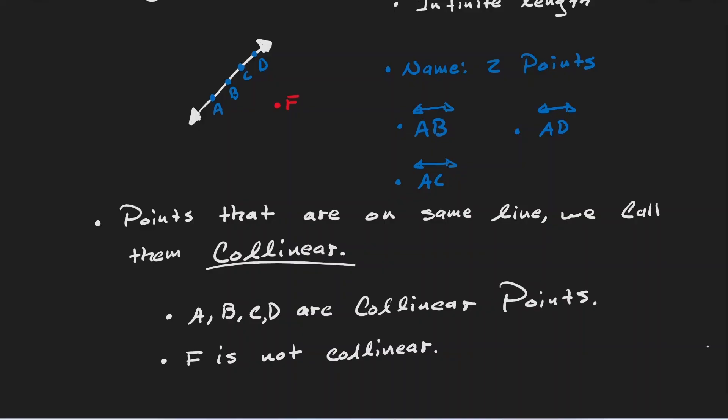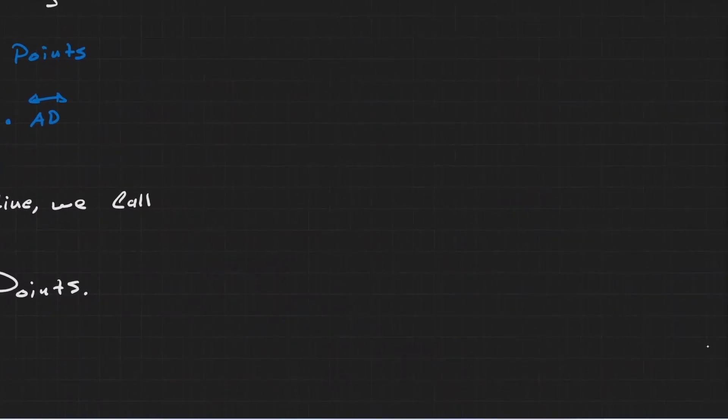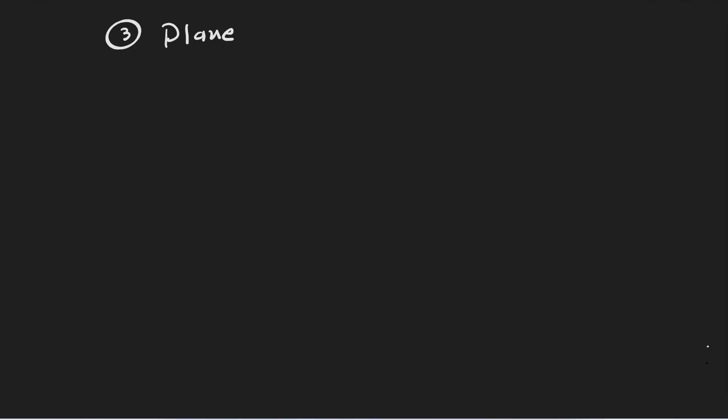Perhaps the last item we need to discuss today is a plane. So what exactly is a plane? A plane is nothing more than a flat surface. The best way to visualize it is just a piece of paper — it's flat. The way that we mostly represent it in geometry, we use a figure that looks like this.